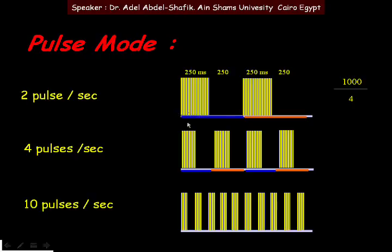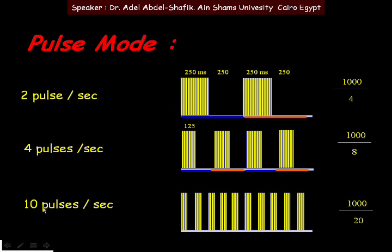At four pulses per second, the second is divided into four parts, each half on and half off, giving eight intervals of 125 milliseconds each. At ten pulses per second, we have ten cycles, each half on and half off, giving twenty intervals of 50 milliseconds each.